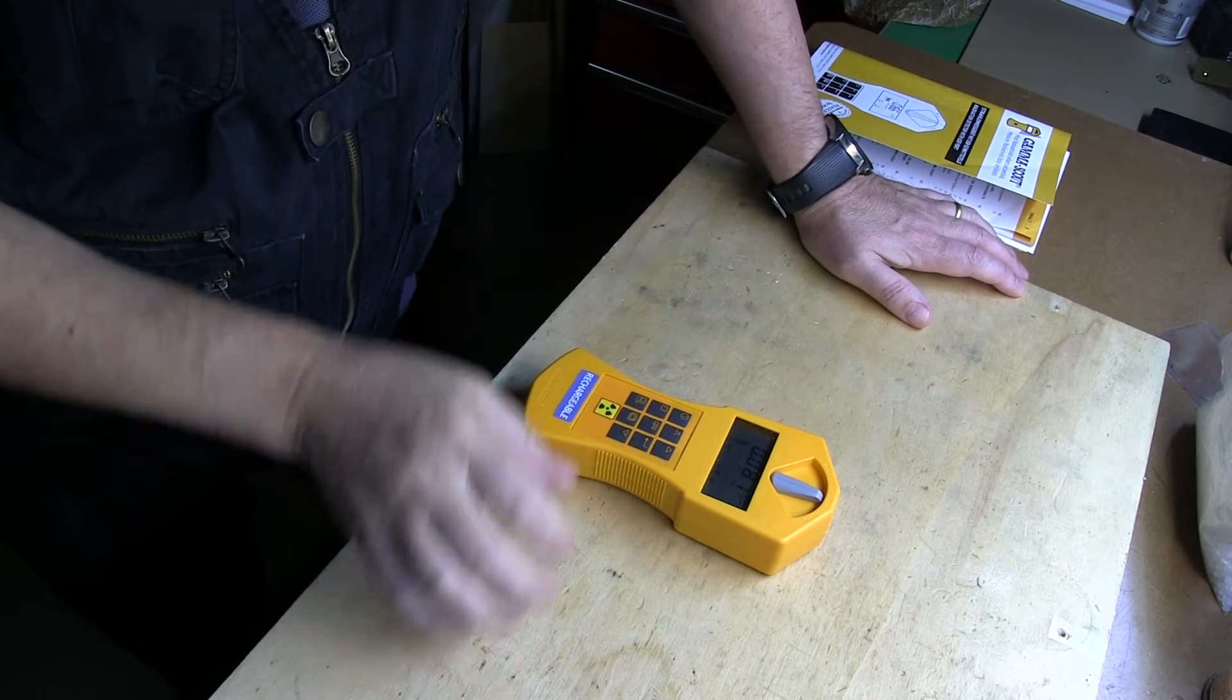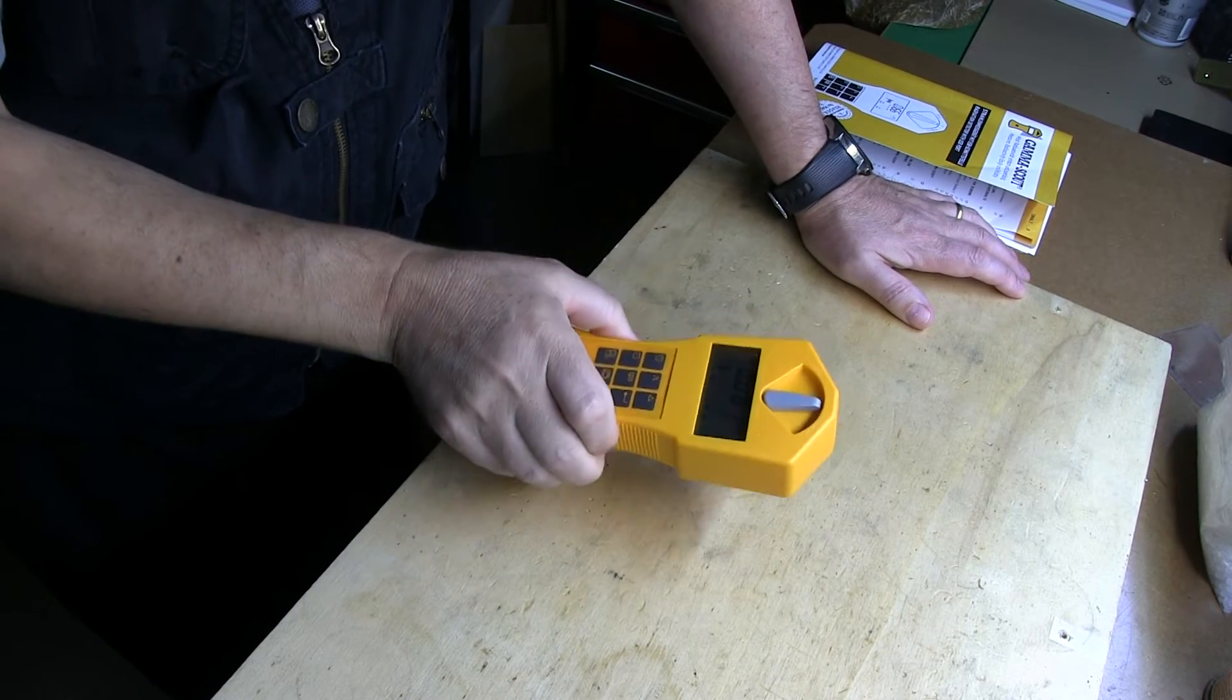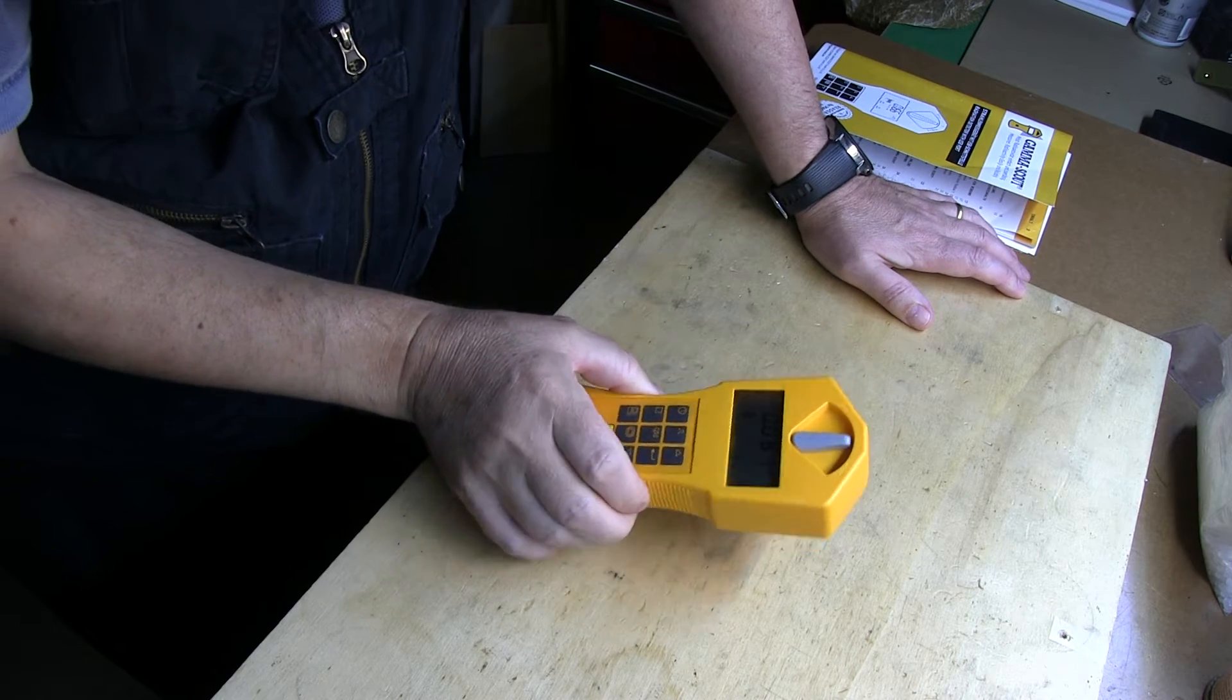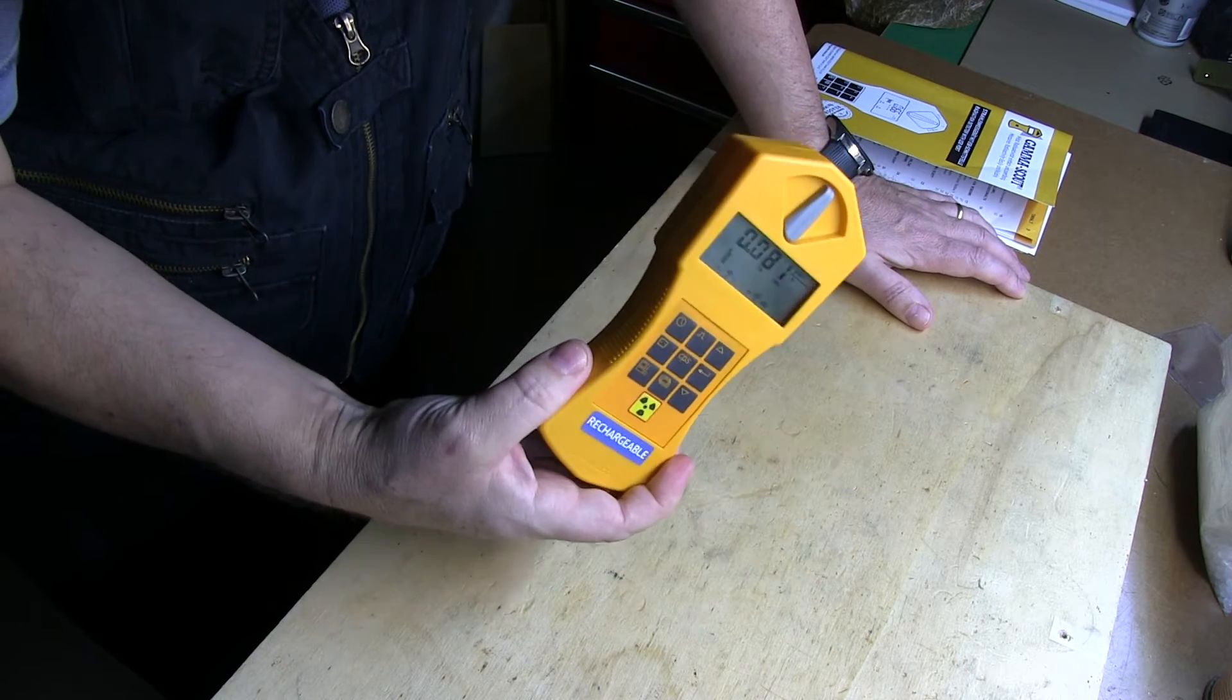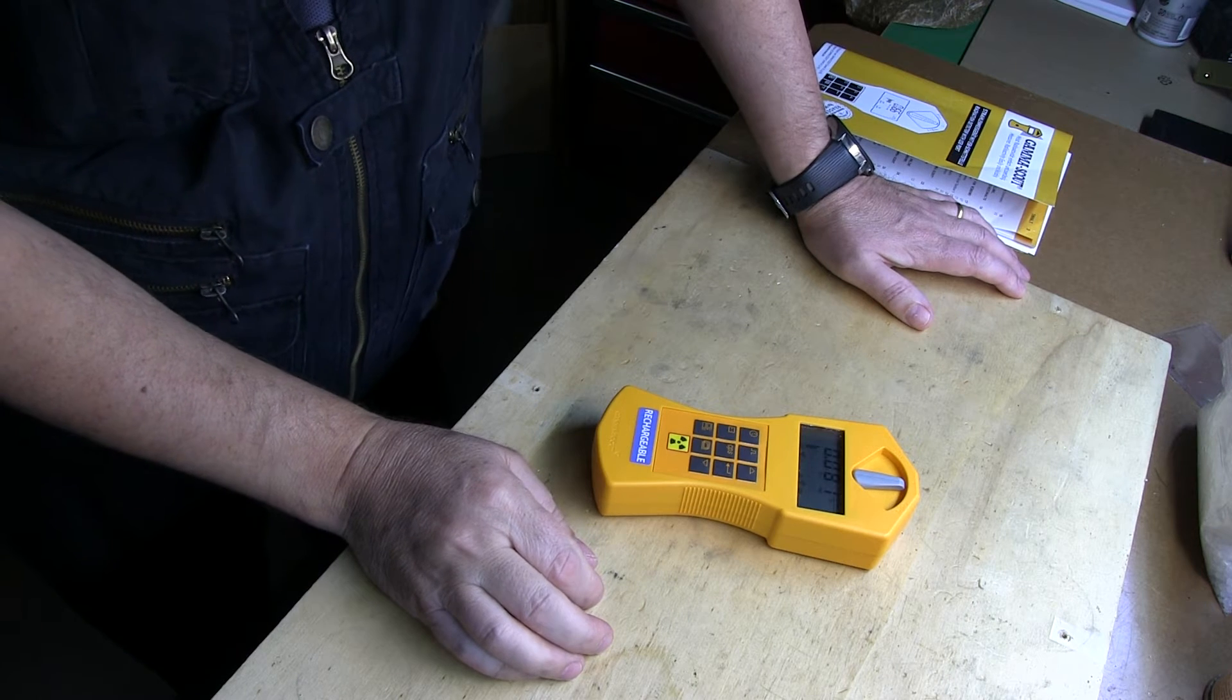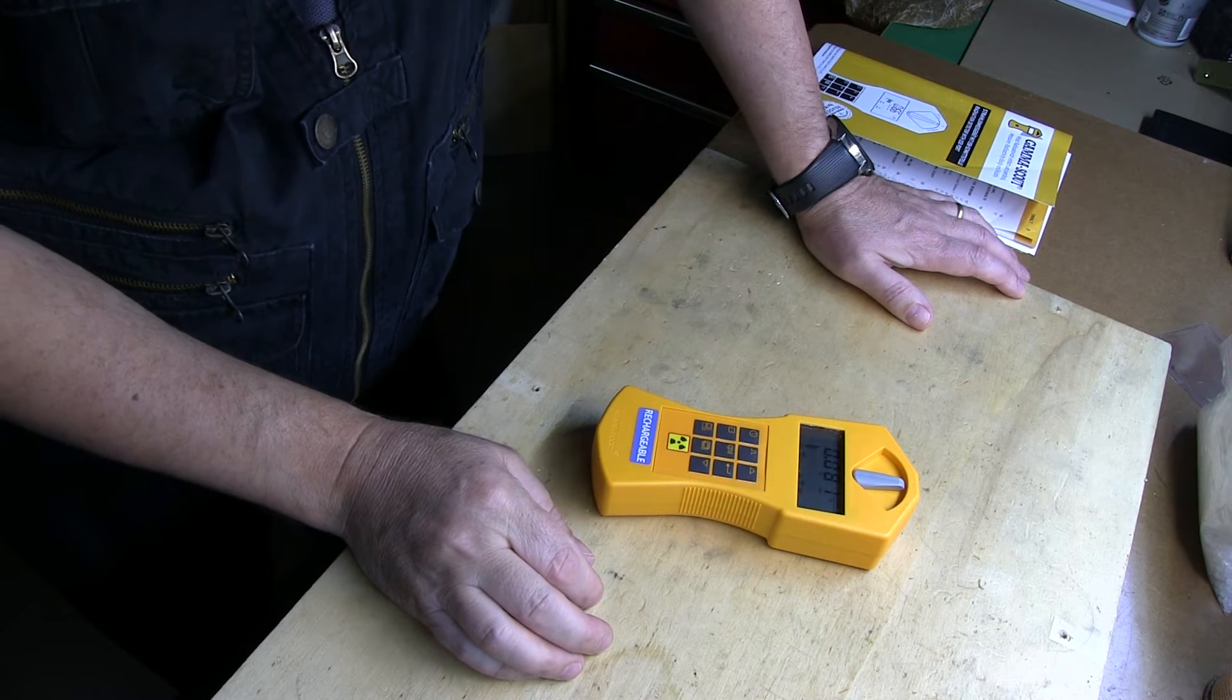Hello and welcome to my channel. This is a short video about how to prevent contamination of Geiger-Müller counters. This is a gamma scout, but it applies to all types of counters that you might own and intend to use.